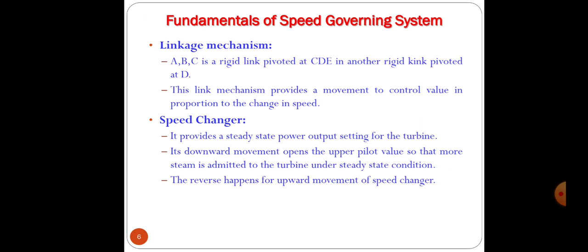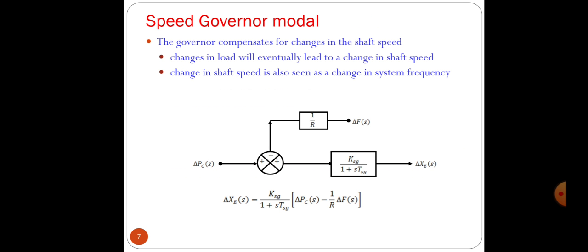The speed governing mechanism includes the speed governor, which is an error sensing device in load frequency control. It includes all the elements that are directly responsive to speed and influence other elements of the system in initiative action. The changes in load will eventually lead to change in shaft speed. Change in shaft speed is also seen as change in system frequency.